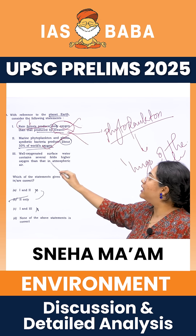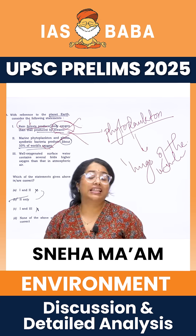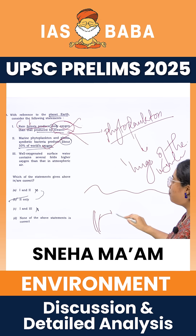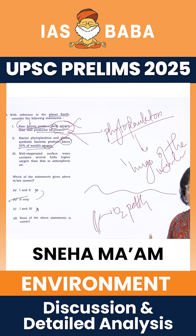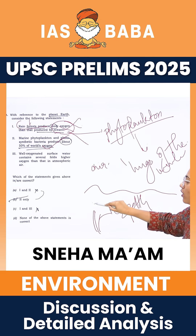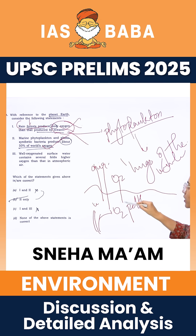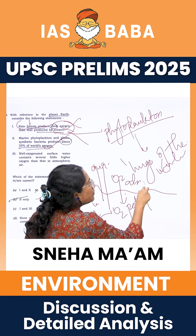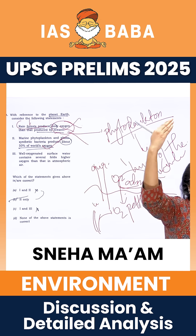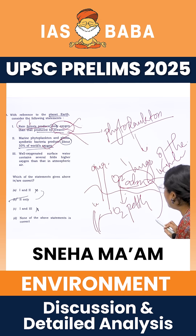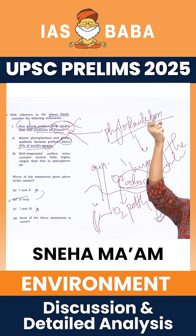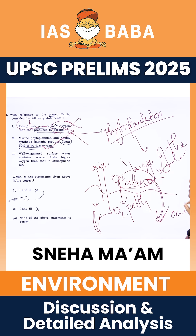Statement 3: Well-oxygenated surface water contains several folds higher oxygen than in atmospheric air — that is wrong. While oxygen production in water may be higher, when you compare air and water, the oxygen that gets dissolved into the water is actually much, much lesser than what is present in the atmosphere. So the amount of oxygen dissolved in your oceans is less. Therefore, the third statement is wrong.